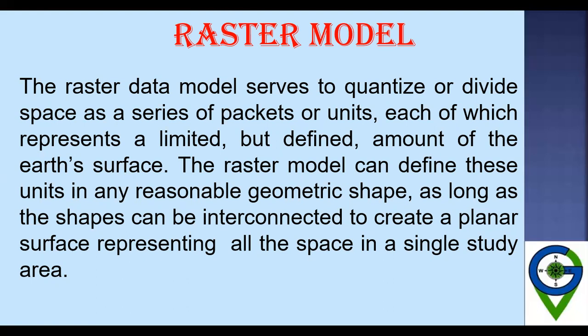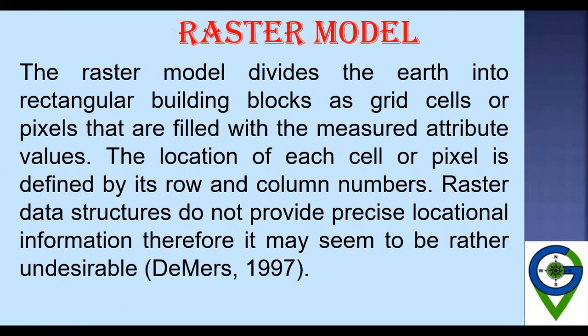Raster images representing geographically referenced spatial data are named georaster by some people. The raster model can define units in reasonable geometric shapes as long as the shapes can be interconnected to create a planar surface representing all the space in a single study area. The raster model divides the earth into rectangular building blocks — grid cells or pixels — that are filled with measured attribute values. As we learned in the last lecture, satellite images are composed of pixels having a digital number, so satellites are also raster images.